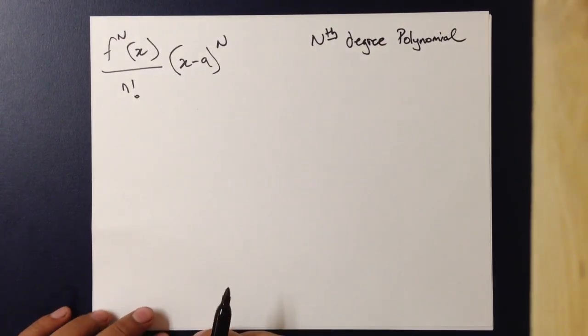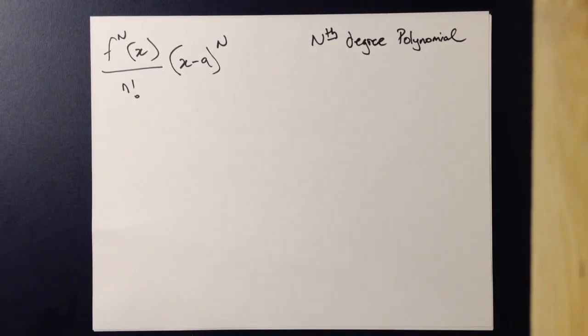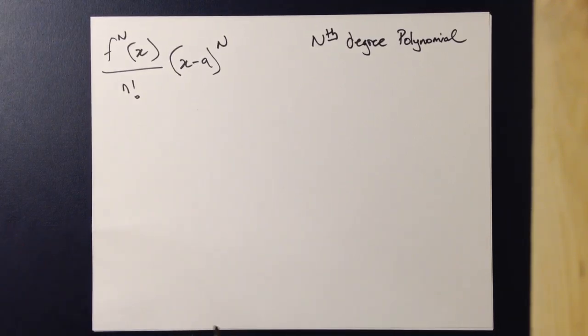Now, how do we know how accurate that polynomial is? A mathematician named Lagrange discovered the Lagrange error bound, which basically states the maximum value of a Taylor polynomial.